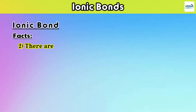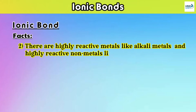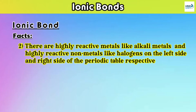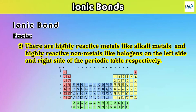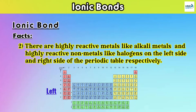Fact number two: there are highly reactive metals like alkali metals and highly reactive non-metals like halogens on the left and right sides of the periodic table respectively. The highly reactive metals such as lithium, sodium, potassium, rubidium, etc., called alkali metals, are situated on the left side of the periodic table, and the highly reactive non-metals such as fluorine, chlorine, bromine, etc., called halogens, are situated on the right side.